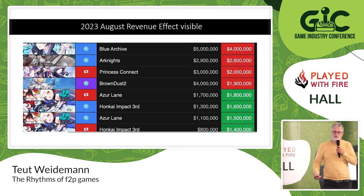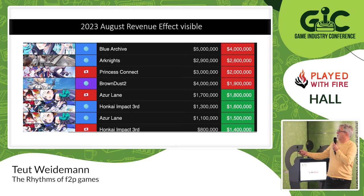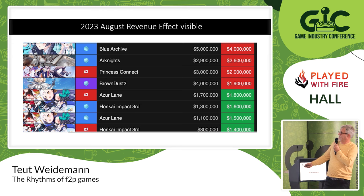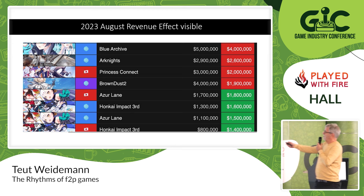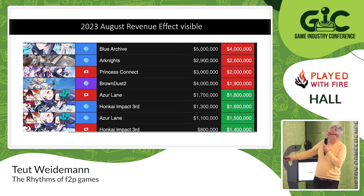Here is an example pulled from the internet: these are major MMORPGs with high revenue, showing monthly revenue — old vs. new. Some games are all in the minus — they did 3 million before, now only 2 million — while one actually gained from 1.7 to 1.8 million. This is all August. They were hit by the holidays; one wasn't. The September revenue was okay again. These are major titles, and we can see there is a clear monthly impact.